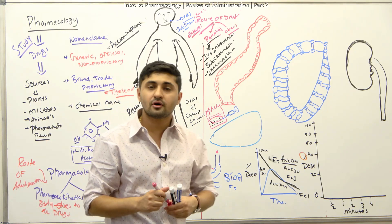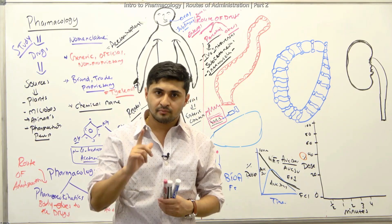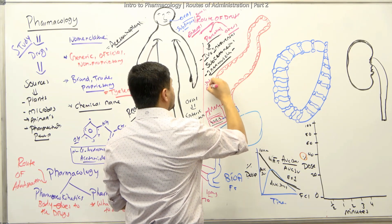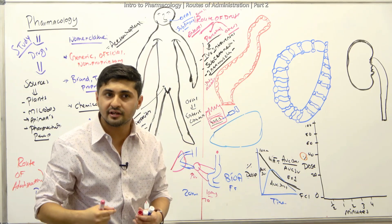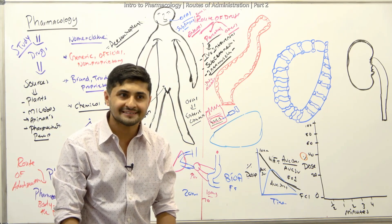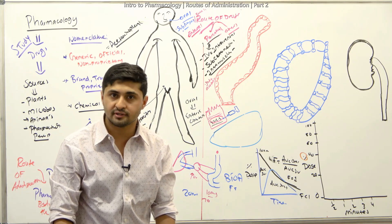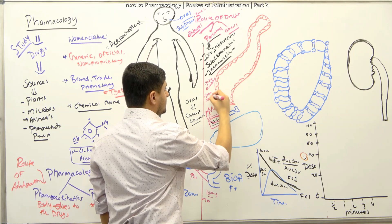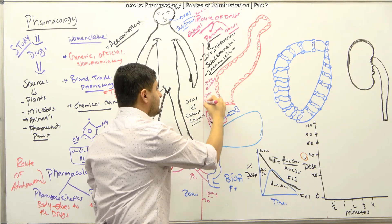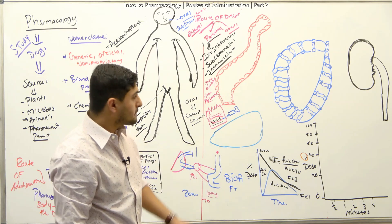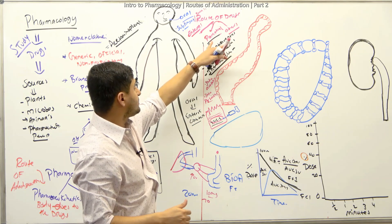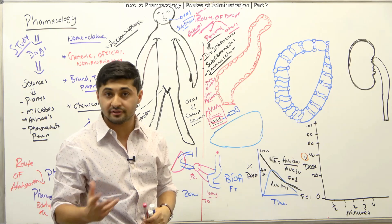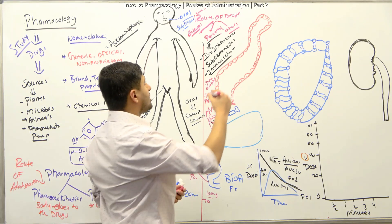We also have to talk about other ways drugs are given. There's intra-articular, which means drugs can be given into joints — for example, corticosteroids for your joints. There's also inter-arterial, where you give the drug to the blood vessel. So parenteral routes include intravenous, subcutaneous, intramuscular, intra-articular, and inter-arterial.